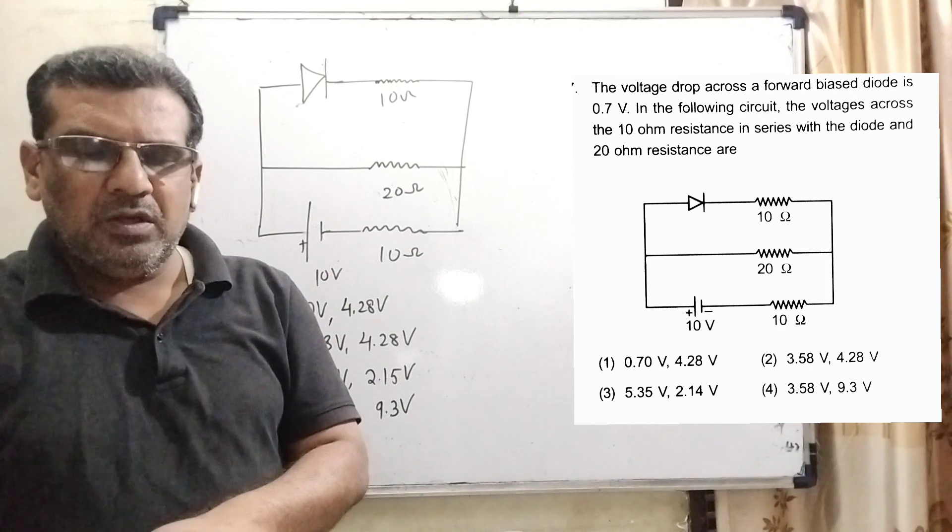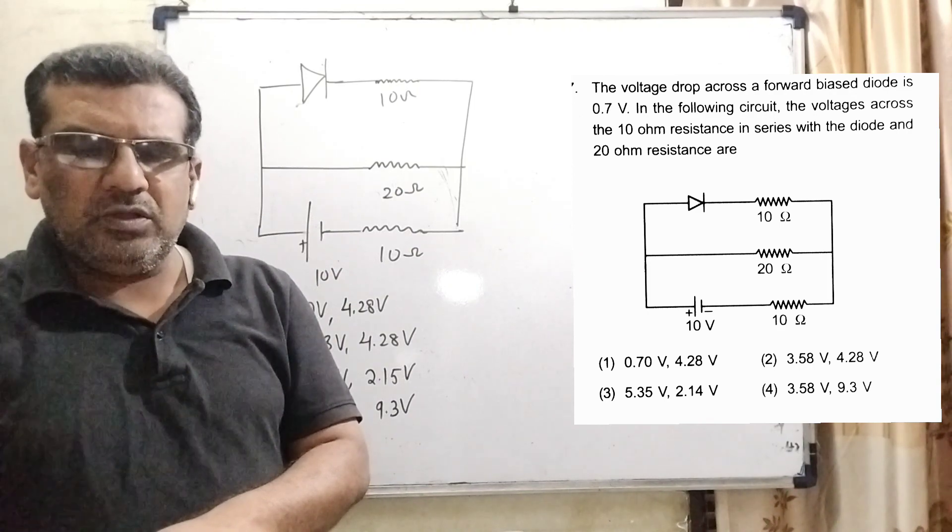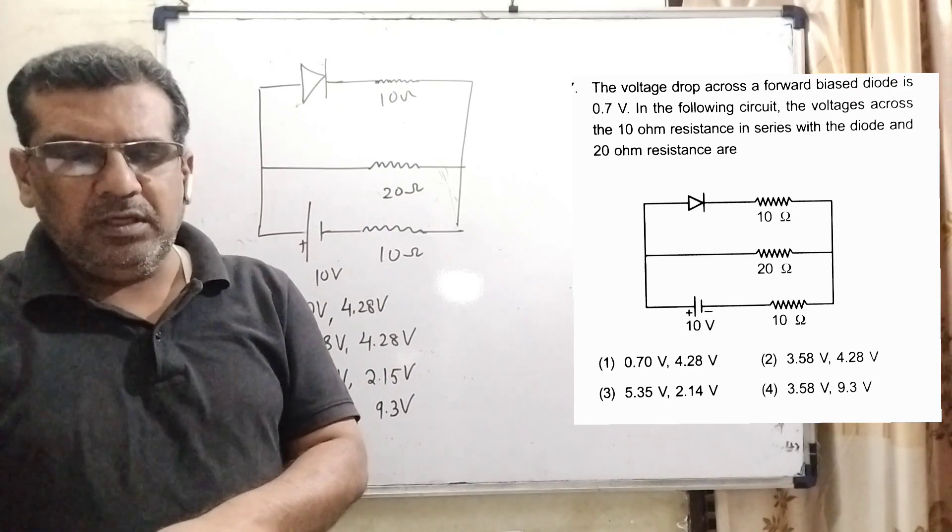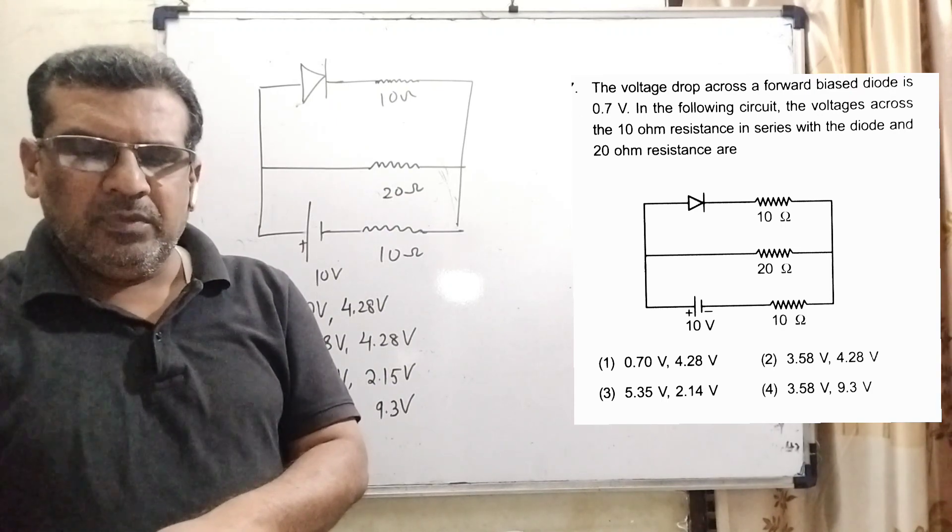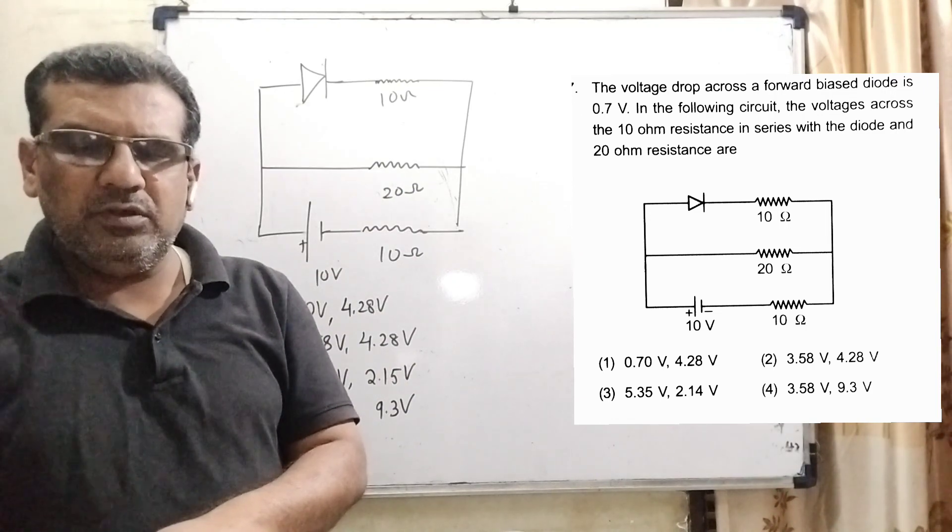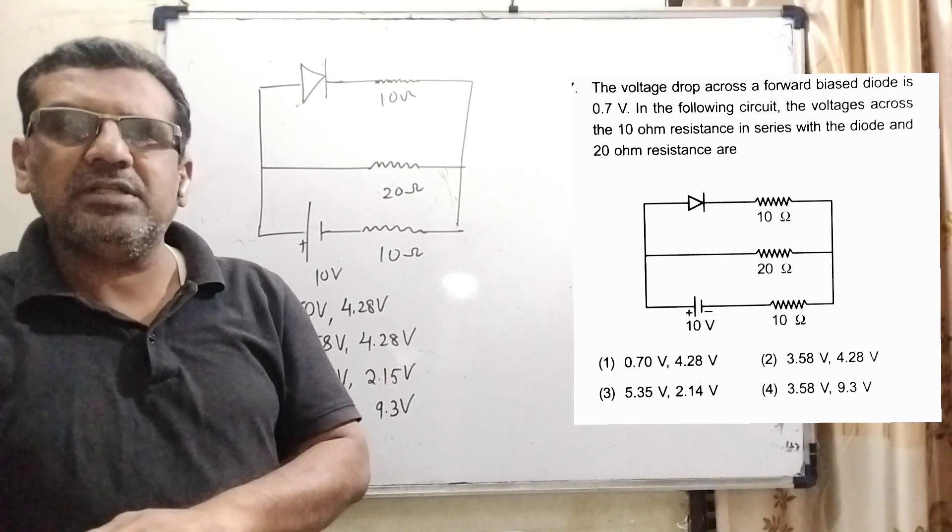Now here is the question. The voltage drop across a forward biased diode is 0.7V in the following circuit. The voltage across the 10 ohm resistance in series with the diode and 20 ohm resistance are.